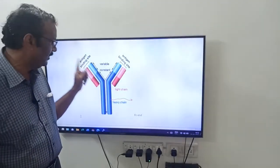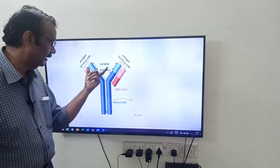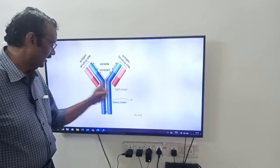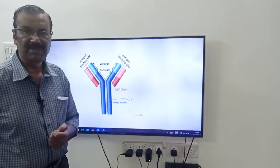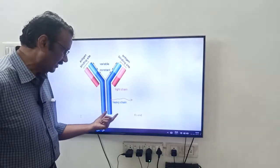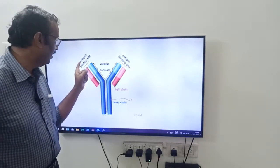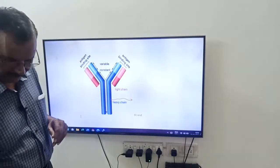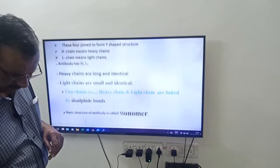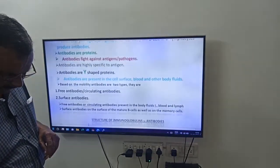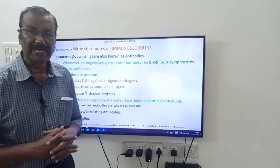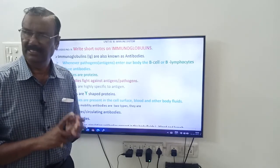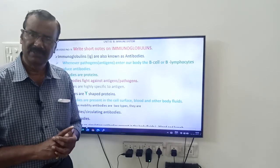Once again, the antibody is Y-shaped. The bluish ones are heavy chains, the pink ones are light chains, linked by disulfide bonds. The FC end is at the base and the Fab end is at the top. There are five types of antibodies: IgG, IgA, IgM, IgE, IgD. Thank you, good day friends.